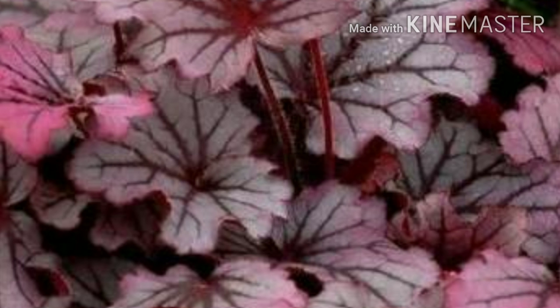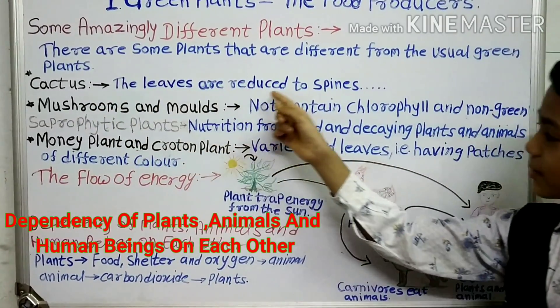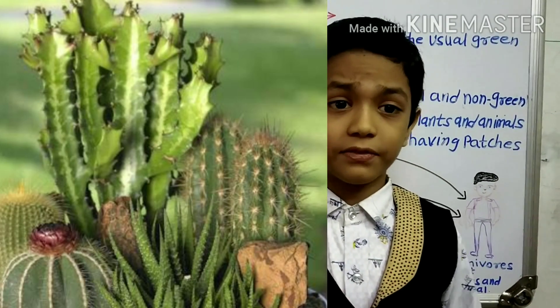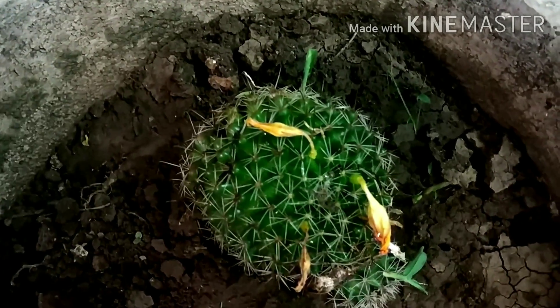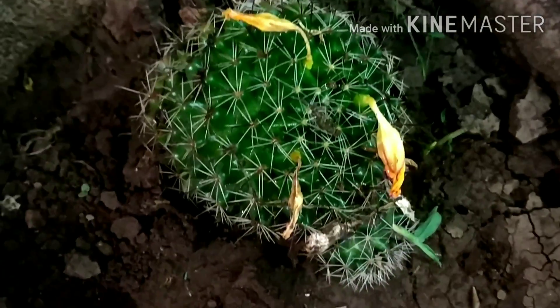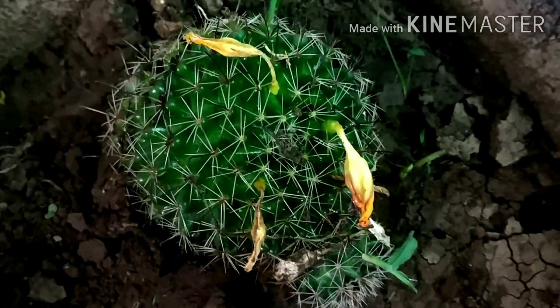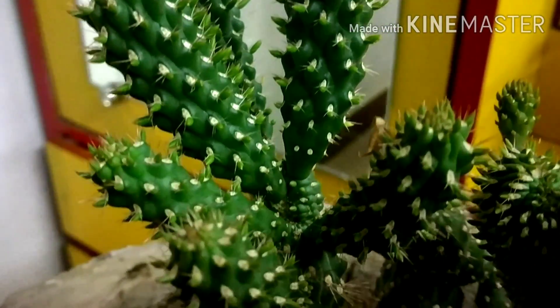First is the cactus. The leaves of cactus are reduced to spines. The statement 'cactus plants do not have leaves' is false — they do have leaves, but the leaves are reduced to spines and cannot perform photosynthesis. So how do they make their own food? They have a green stem which performs photosynthesis.